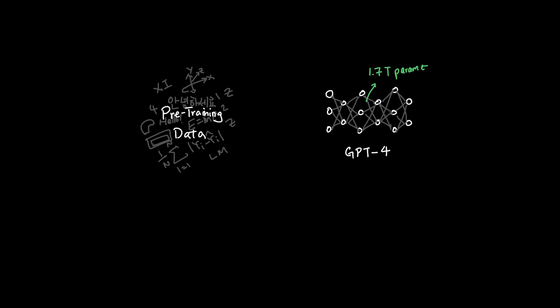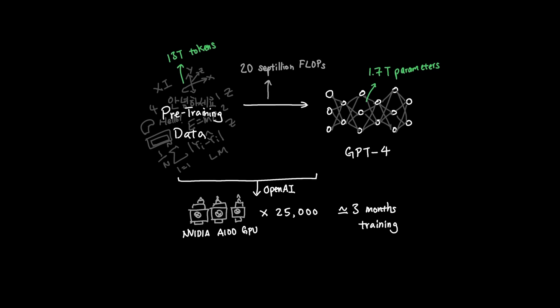GPT-4 is assumed to be a 1.7 trillion parameter model that was pre-trained on 13 trillion tokens of data, which required around 20 septillion floating point operations. Meaning in order to train this giant model, OpenAI likely used up to 25,000 A100 GPUs that in total took them about three months to train. And each of these A100 GPUs consumes up to 400 watts of power. And once you stack 25,000 of them, the energy demand starts to add up really fast.